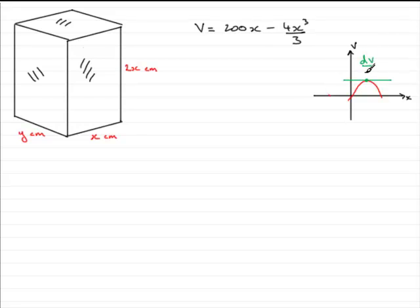In other words, you differentiate dV by dx in this case. And at this point, dV by dx has got to equal zero, the gradient's got to be zero. And so that's basically what we've got to do in this question. We've got to differentiate this with respect to x and put it equal to zero.